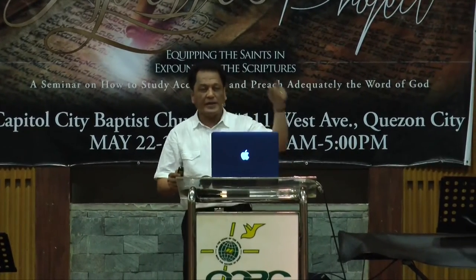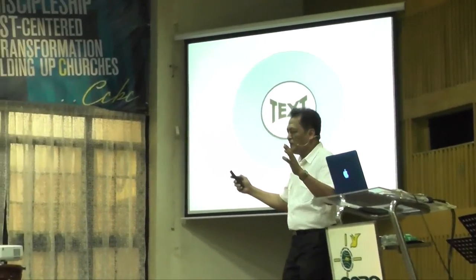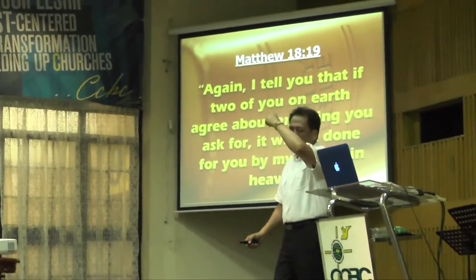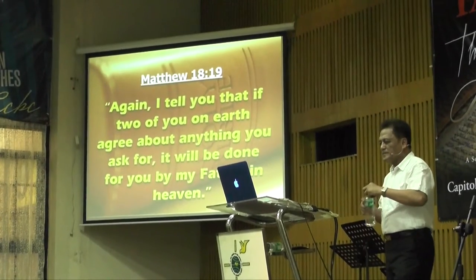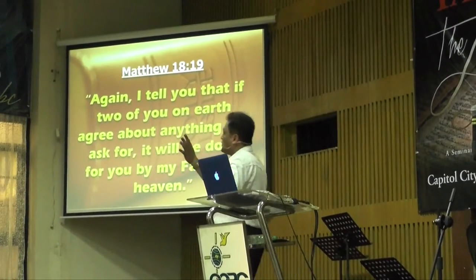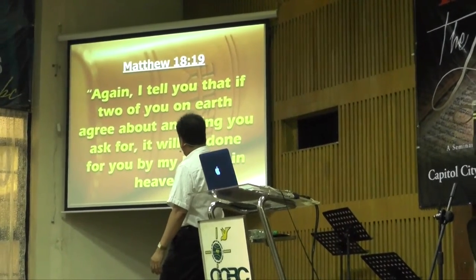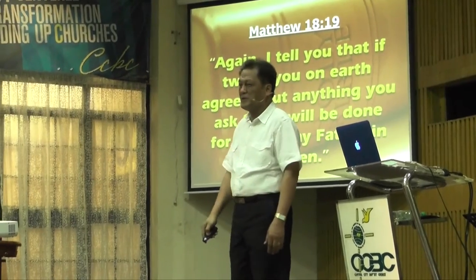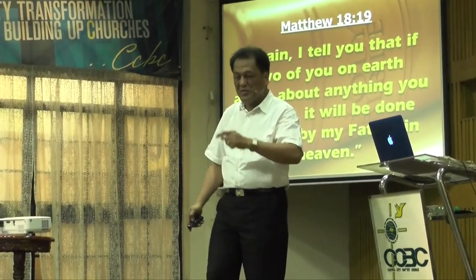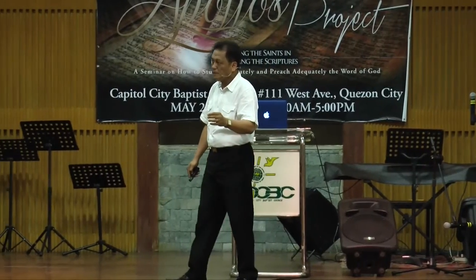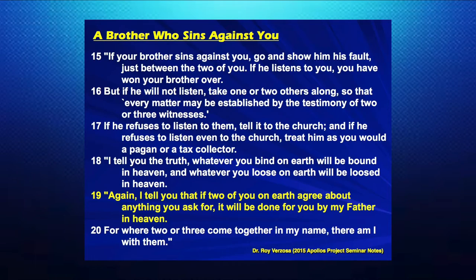One more example — Matthew 18:19. This verse seems like a blank check: 'If two of you on earth agree about anything, it will be done for you by my Father in heaven.' Now let's look at the immediate context. The paragraph starts at verse 15, with the title 'A Brother Who Sins Against You.' That's the context of Matthew 18:19.